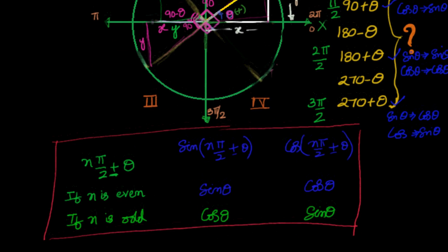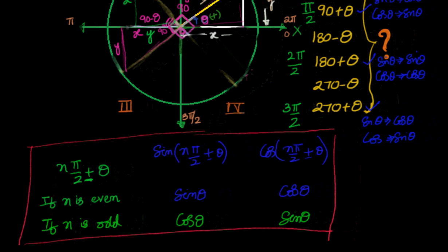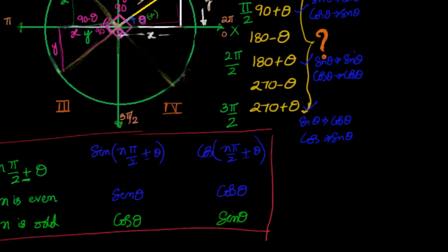Based on that, we have generalized: to find n·π/2 plus or minus theta, where theta is between 0 and 90 degrees — if n is even, sine remains as sine and cosine remains as cosine. But if n is odd, sine will become cosine and cosine will become sine. Let us try one simple example so you can appreciate this concept.